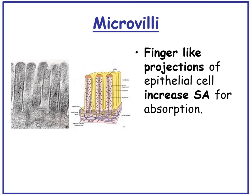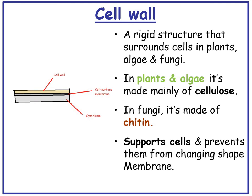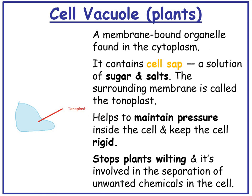Microvilli are finger-like projections of epithelial cells that increase the surface area for absorption. The cell wall is found in plants, algae, and fungi — it is a rigid structure surrounding the cell. In plants and algae it is made of cellulose, but in fungi it is made of chitin. It supports the cell and prevents it from changing shape. The cell vacuole is found in plants and is also known as the tonoplast — a membrane-bound organelle in the cytoplasm containing cell sap, which is a solution of sugar and salt. It helps to maintain pressure inside the cell, keeps the cell rigid, stops the plant wilting, and is involved in the separation of unwanted chemicals in the cell.